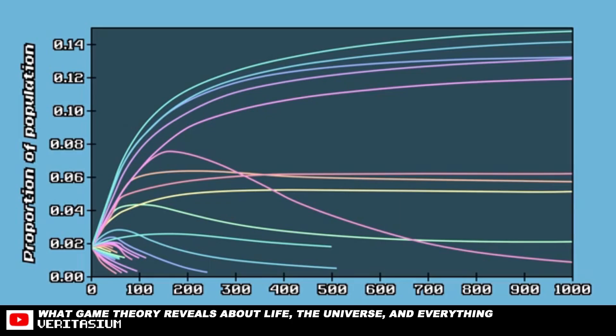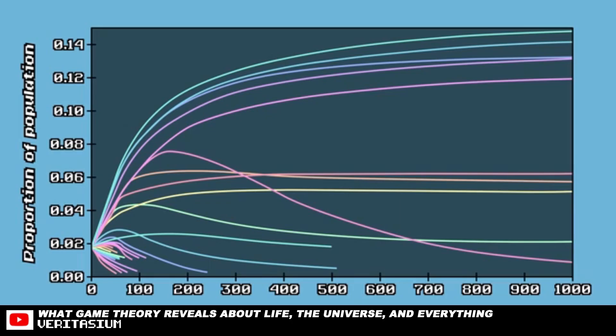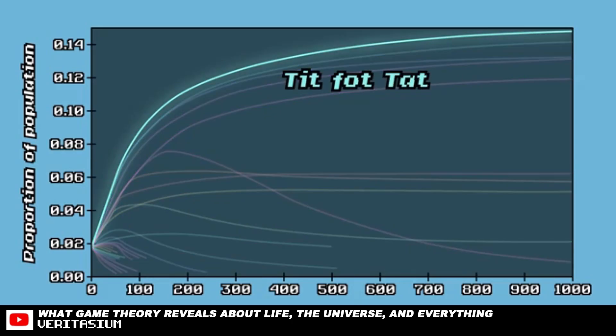Only nice strategies survive. Again, Tit for Tat comes out on top. Tit for Tat won basically over a thousand iterations.